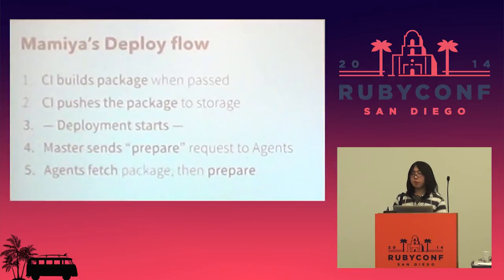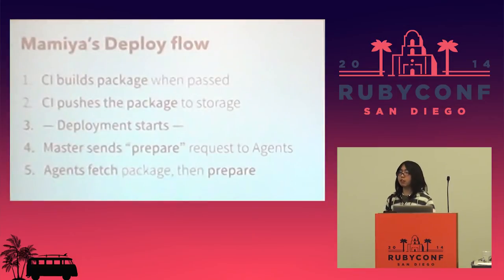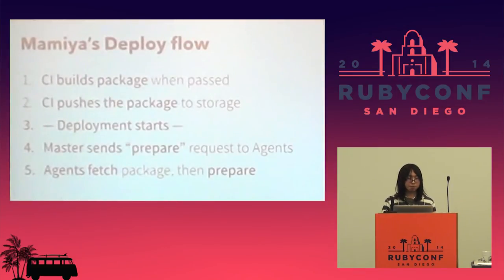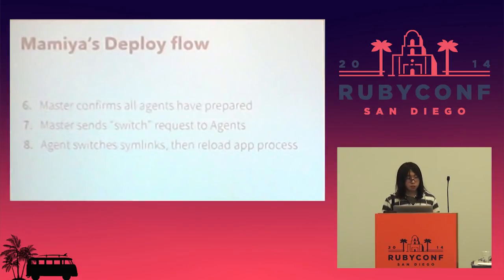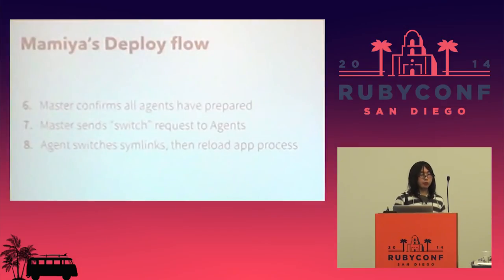Here's the deployment flow with Mamiya. CI builds the package when passed, and CI pushes the package to storage, then deployment starts. Master sends a prepare request to agents, agent fetches and prepares the package. Next, Master confirms all agents have prepared, and Master sends a switch request to agents. Then finally, agent switches symlinks and reloads the process.